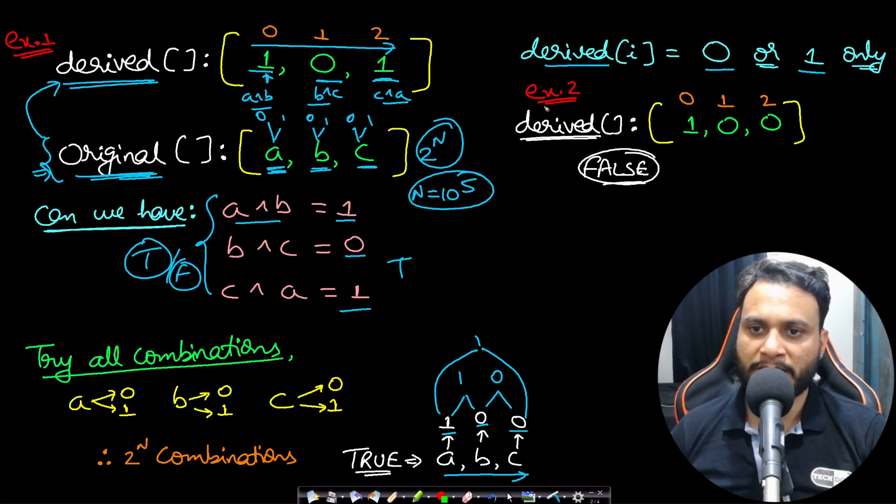Now if you look at example number 2, if the derived value is [1, 0, 1], then you cannot have any valid value of a, b, c in such a way that a XOR b will be 1, b XOR c will be 0, and c XOR a will be 0. It will not be possible. So for that reason we will be returning false here.